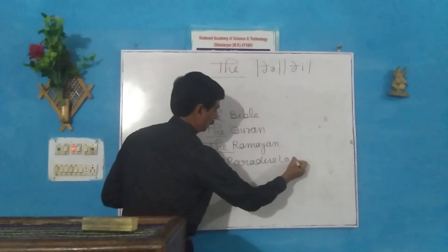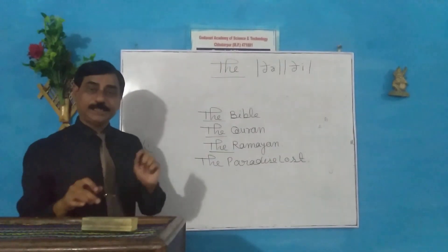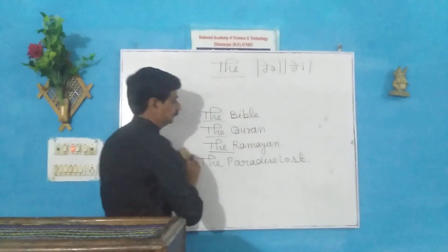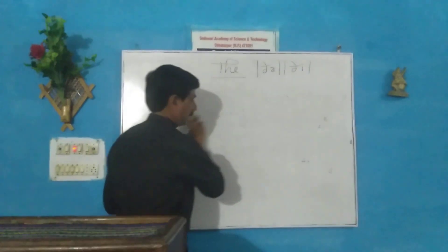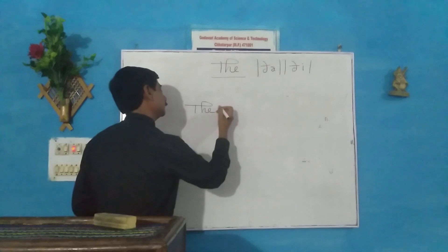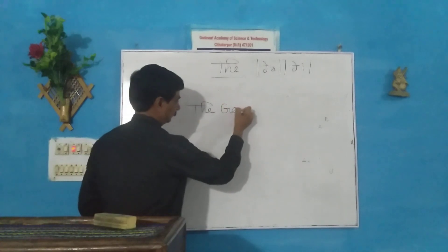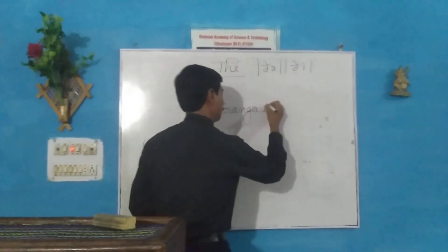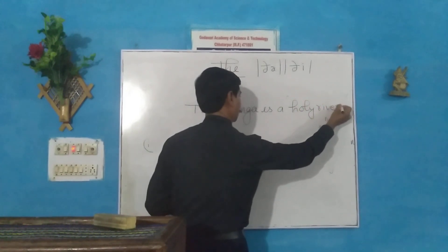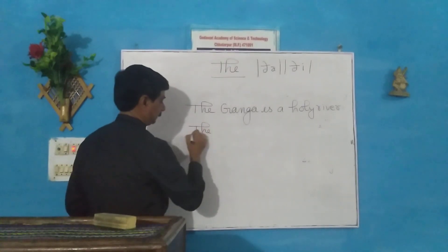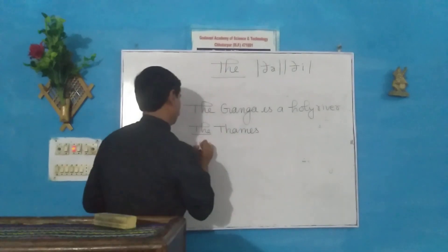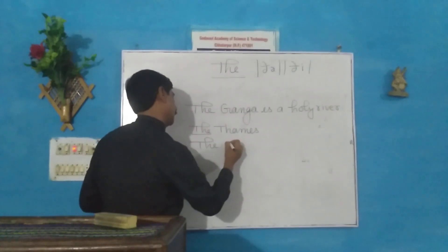Next: The is used before famous rivers. Before the names of rivers, we use the. The Ganga. The Ganga is a holy river. The Thames. The Brahmaputra.